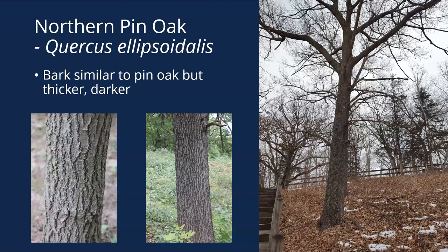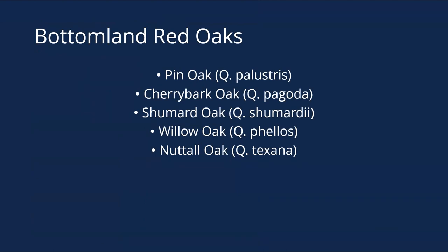Those are our upland oaks. The vast majority of red oaks you'll see in the upland would be black oak, northern red oak, or shingle oak, but you can find some of these others in the right locations as well. Now let's cover our bottomland oaks — the last of our 21 oaks to cover. The most common of the bottomland oaks would be pin oak.